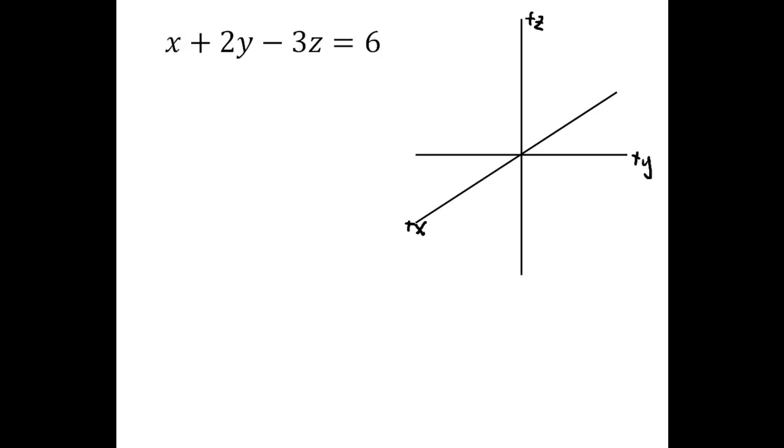This time we're going to graph the surface x plus 2y minus 3z equals 6 in 3 dimensions. This is an equation that you really should recognize the form of, it will be helpful, because if you recognize the form you can do this in a much easier way than we've done some of the other surfaces.